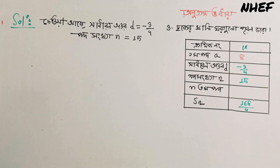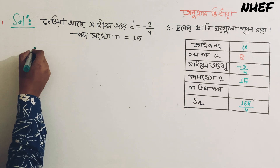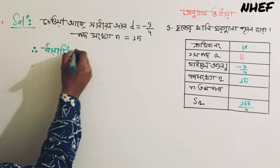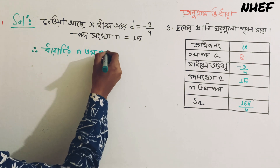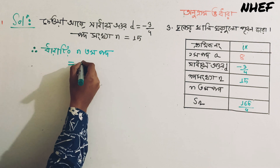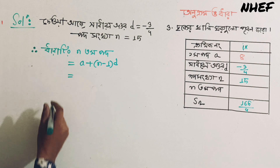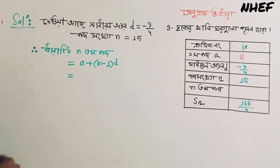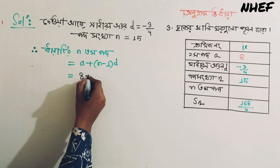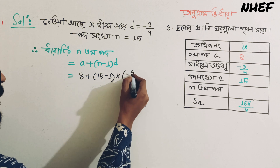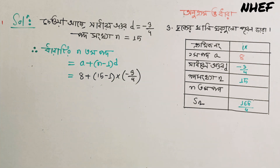Now, the nth term is: a plus (n minus 1) into d. So we have a plus (n minus 1) into d, which gives a plus y, minus 3 divided by 4. Right, minus 3 divided by 4. d equals minus 3 divided by 4.